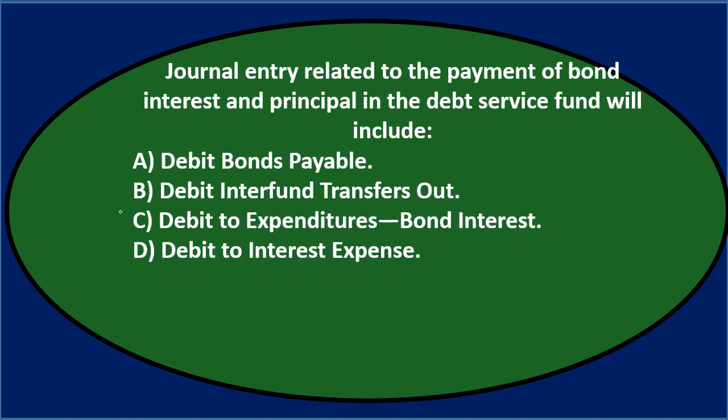Next question. A journal entry related to the payment of bond interest and principal in the debt service fund will include either: A, debit bonds payable; B, debit interfund transfer out; C, debit to expenditures — bond interest; or D, debit to interest expense. Let's go through this using the process of elimination. We have a bond, and we're paying off the interest and principal. What would that look like?